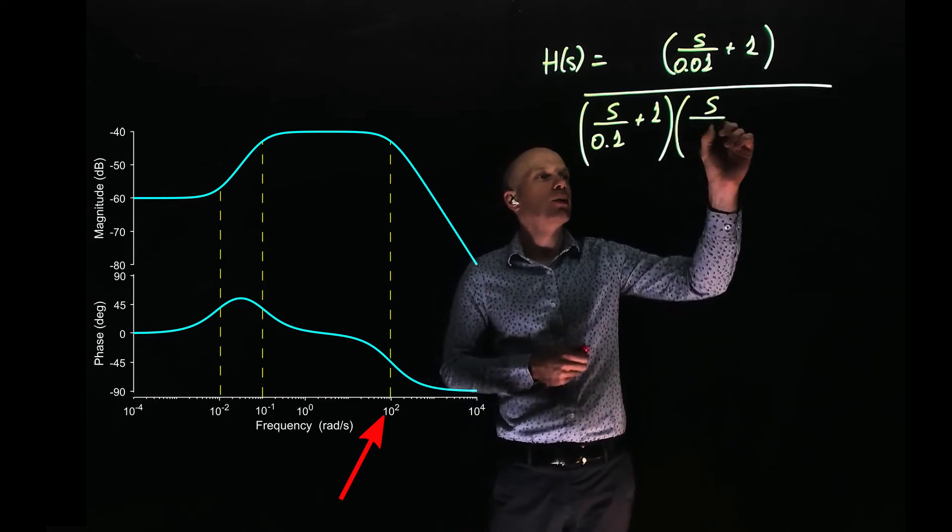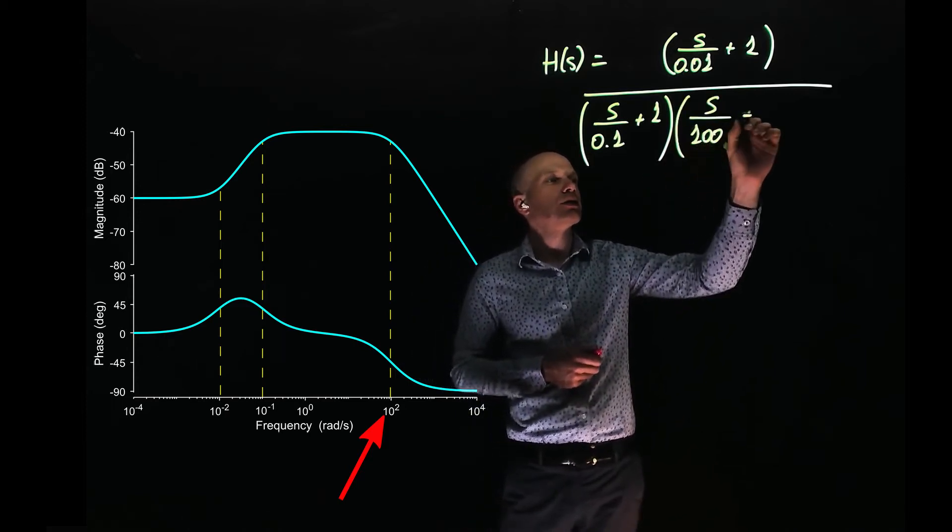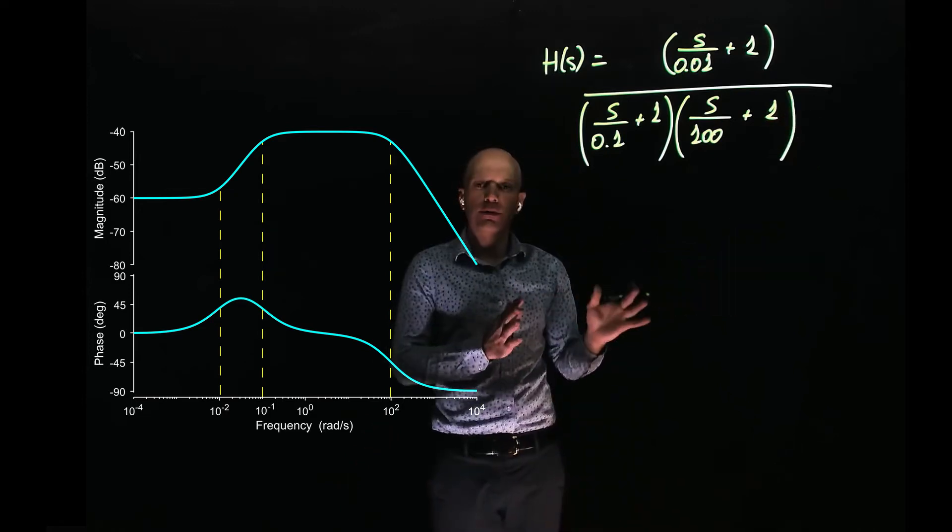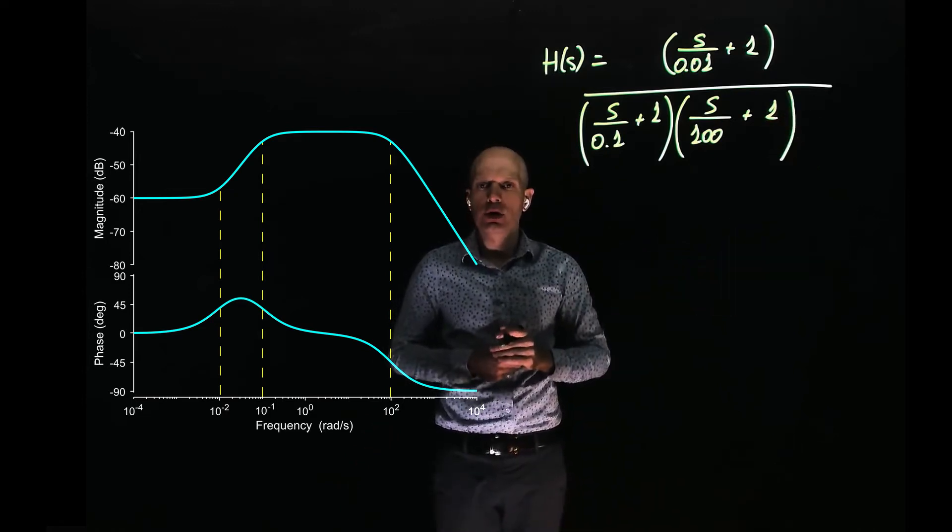The pole here is placed at 100 radians per second, and this is the first draft of our transfer function. What is missing?